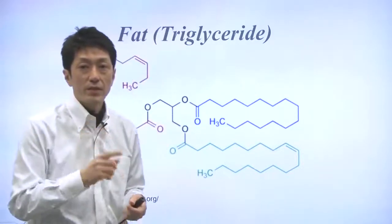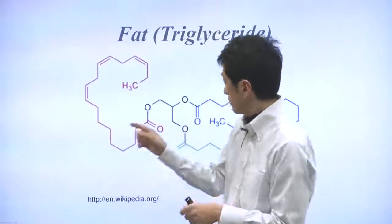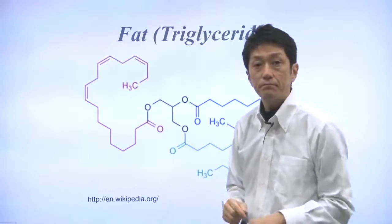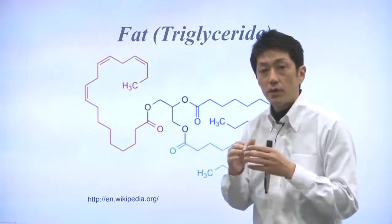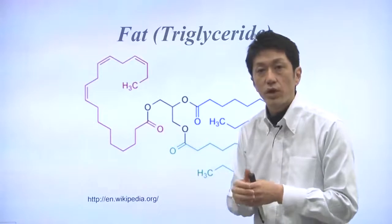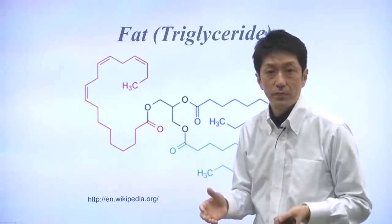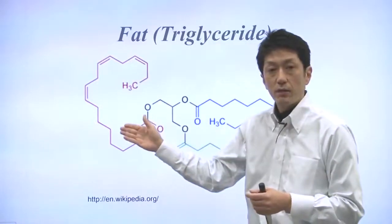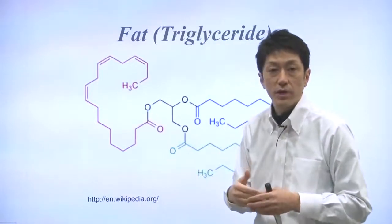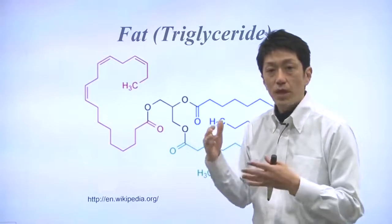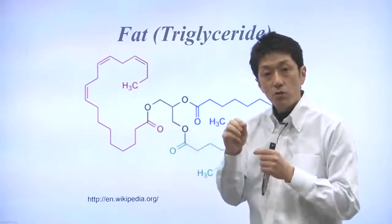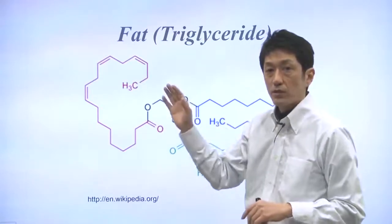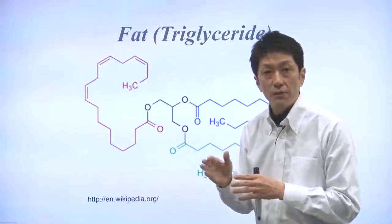In contrast, if fatty acids are less saturated, triglycerides tend to be liquid, just like olive oil. Plant oils tend to have more unsaturated fatty acids in triglycerides. Because of the double bonds, the structure is no longer straight, so fats no longer pack together. That's why at room temperature, plant oils tend to be liquid.